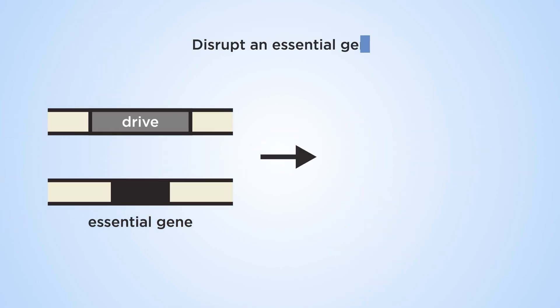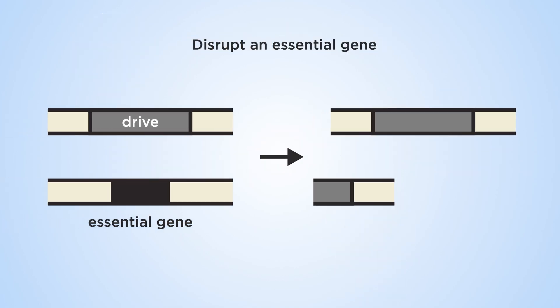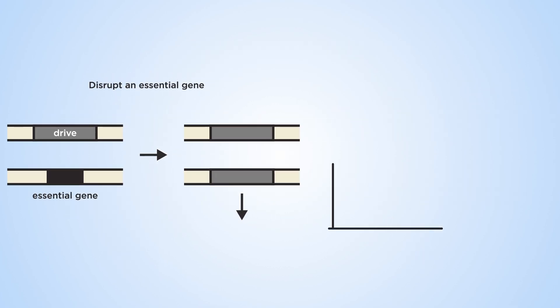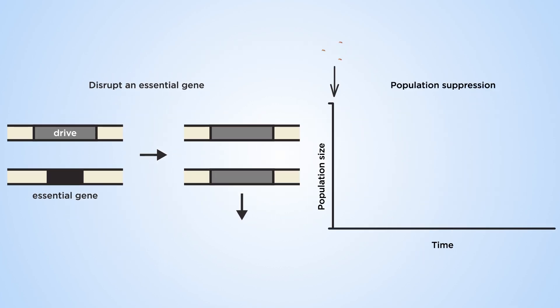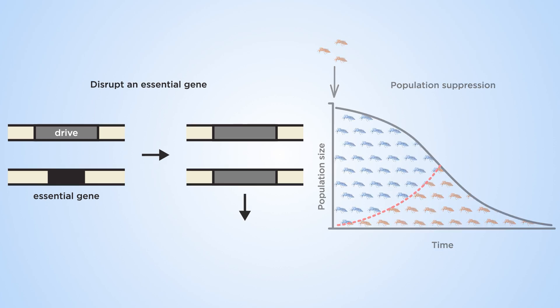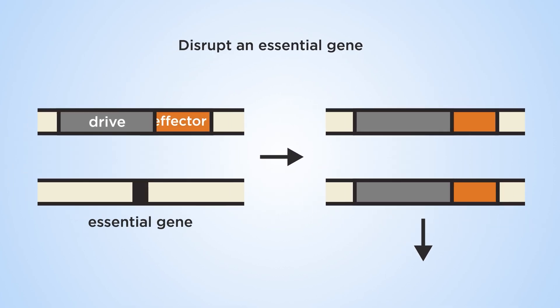Population suppression involves biasing offspring to mostly males, or by producing infertile females, resulting in a decline in population of malaria vectors over several generations.